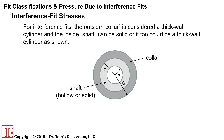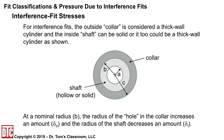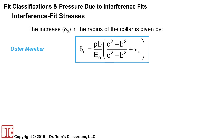Now that we have the delta values, let's look at the stresses that occur in interference fit assemblies. We have an outside collar treated as a thick wall cylinder, and an inside shaft that can be either solid or also a thick wall cylinder. The inside diameter is A (which may be zero for a solid shaft), the nominal radius is B, and the outside radius of the collar is C. At the nominal radius B, the radius of the hole in the collar increases by delta sub O, and the radius of the shaft decreases by delta sub I.